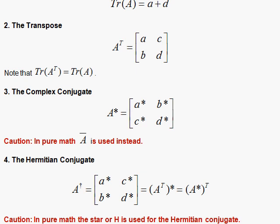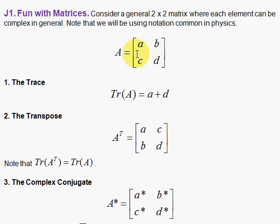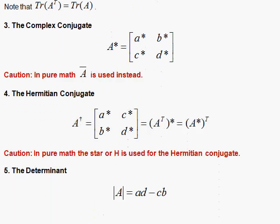The determinant is simply given by taking A times D minus BC for a 2 by 2 matrix. That's your determinant here.